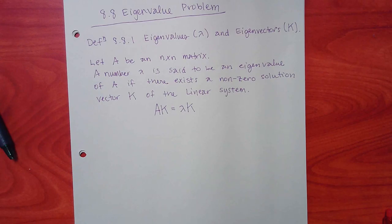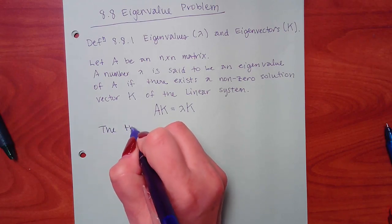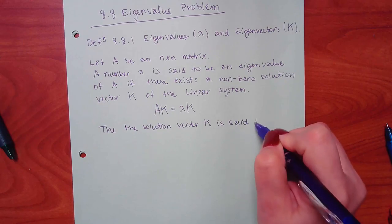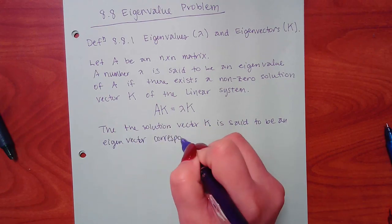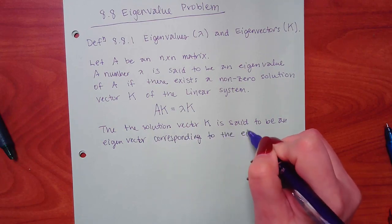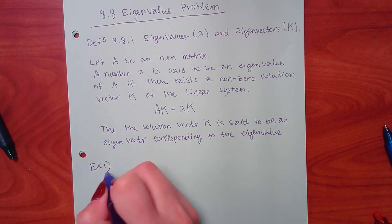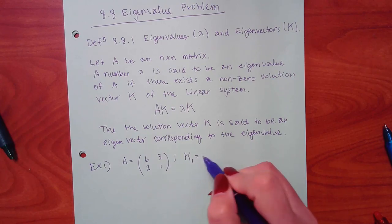I skipped over the multiplication section because if I did that section we would have to do 2×2s and 3×3s and 4×5s and all kinds of stuff. We just need to do the 2×2s because that's all they have us do in this section. Let me finish this definition: the solution vector K is said to be an eigenvector corresponding to the eigenvalue.